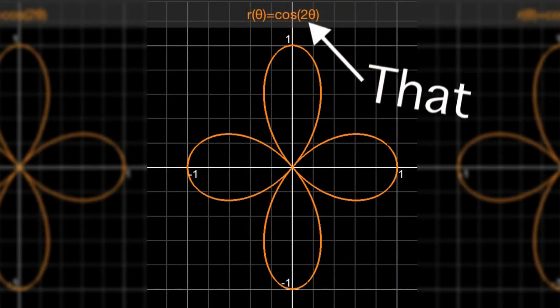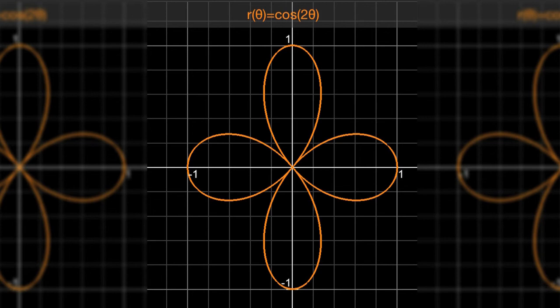Cosine 2 theta - that's a polar rose. Our argument's been doubled, so we're going to double the number of petals and we get four, because we're going to have negative r's. And it's cosine, so it starts on x.